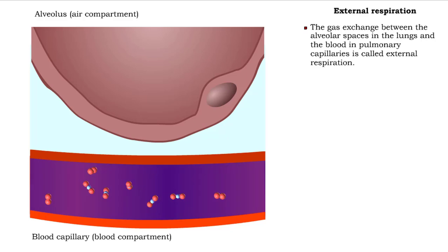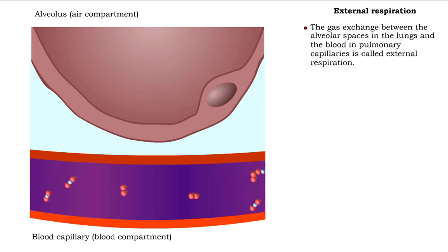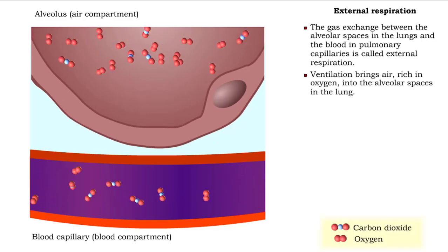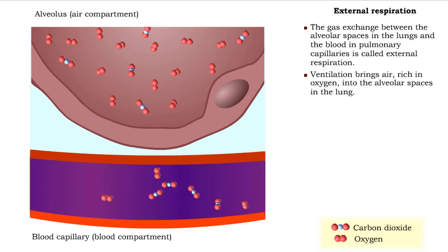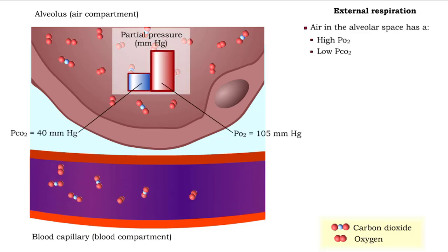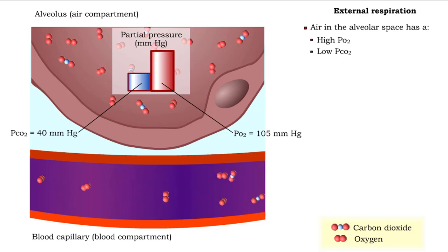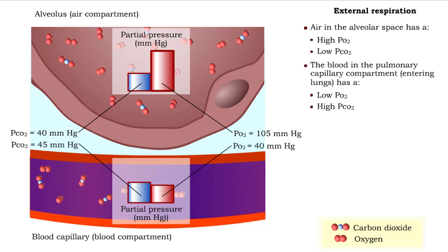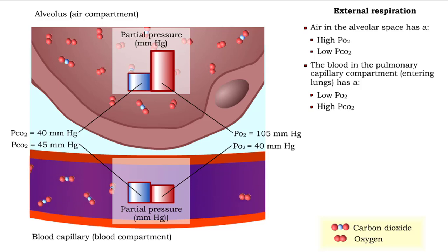The gas exchange between the alveolar spaces in the lungs and the blood in pulmonary capillaries is called external respiration. Ventilation brings air rich in oxygen into the lungs and the air spaces in the alveoli. Alveolar air has a higher oxygen concentration and consequently a higher partial pressure of oxygen than the blood entering the lungs. In contrast, the partial pressure of carbon dioxide is higher in the blood in pulmonary arterioles than in the alveolar compartment. Thus the blood in the pulmonary capillary compartment has a lower partial pressure of oxygen and a higher partial pressure of carbon dioxide.